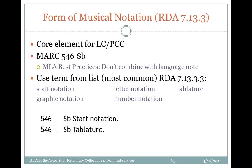The form of musical notation is defined as a set of characters and/or symbols used to express the musical content of the resource. This is a core element for LC-PCC, recorded in 546 subfield B. The MLA best practices recommend making this a separate note from the language note. Use terms from the list at 7.13.3.3. Common terms include: staff notation for notes on a traditional music staff, graphic notation for pictorial or drawn notation, and tablature, which has a broader RDA definition than just guitar.